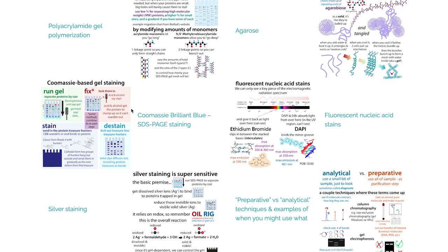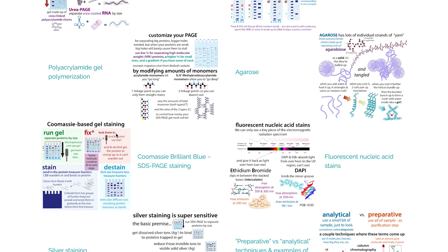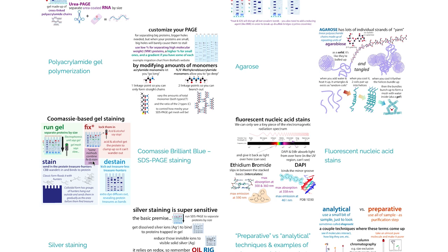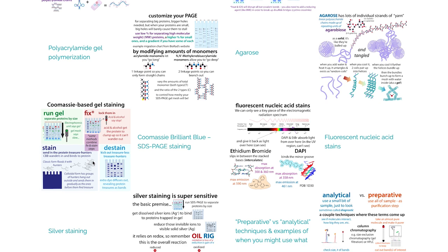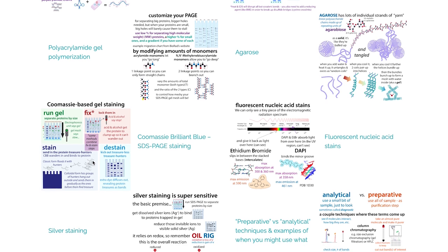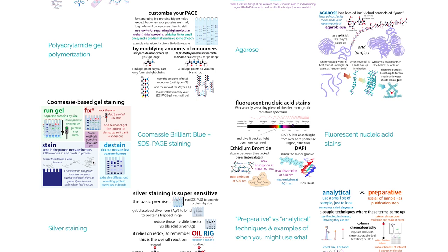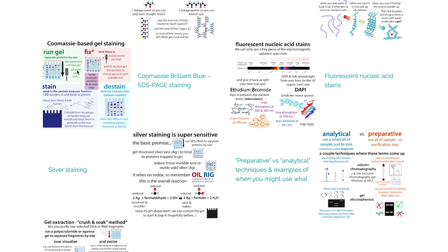If you want to look for proteins in a gel, you typically use Coomassie — a blue stain. Nowadays they have colloidal Coomassie versions that are quick-stain versions. These stain more quickly and you don't have to use acid and methanol to fix things in place and then wash everything out. Those colloidal ones are a lot nicer to use and better for the environment since you don't have to use a bunch of methanol.